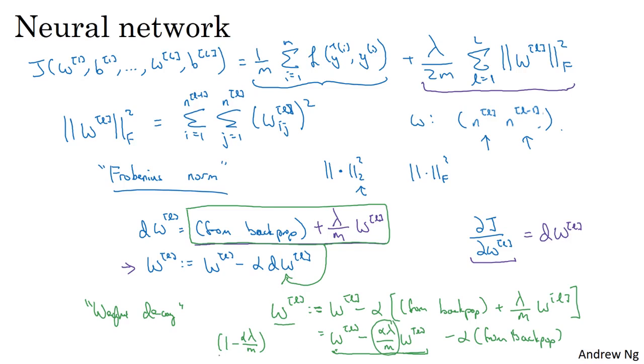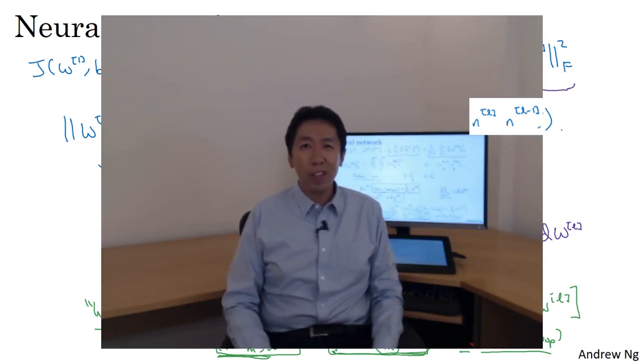So it's like you're multiplying the matrix W by this number which is going to be a little bit less than 1. So this is why L2 norm regularization is also called weight decay, because it's just like the ordinary gradient descent where you update W by subtracting alpha times the original gradient you got from backprop, but now you're also multiplying W by this thing which is a little bit less than 1. So the alternative name for L2 regularization is weight decay. The intuition for why it's called weight decay is that this first term here is equal to this, so you're just multiplying the weight matrix by numbers slightly less than 1. So that's how you implement L2 regularization in a neural network.